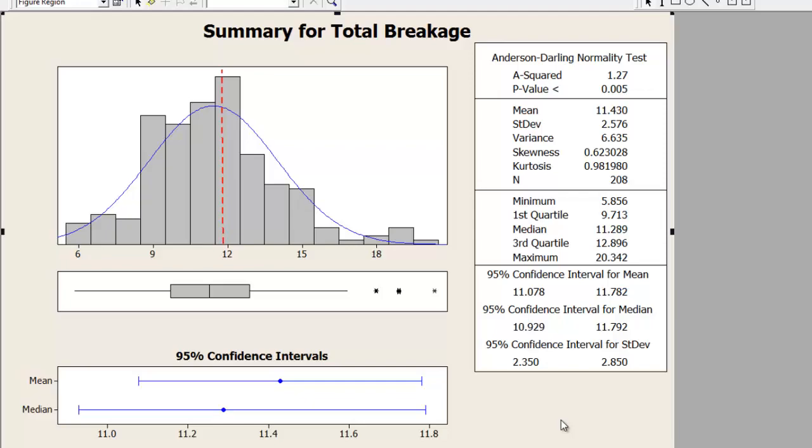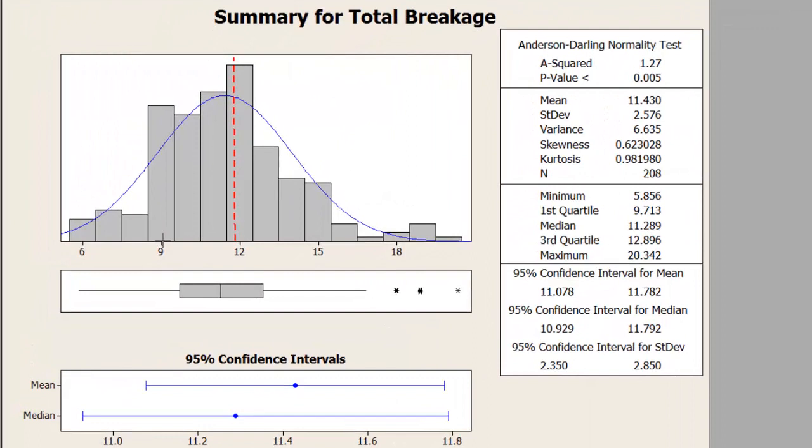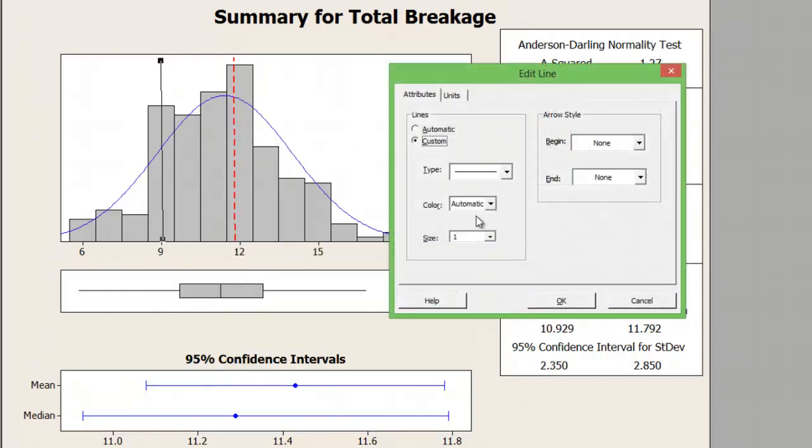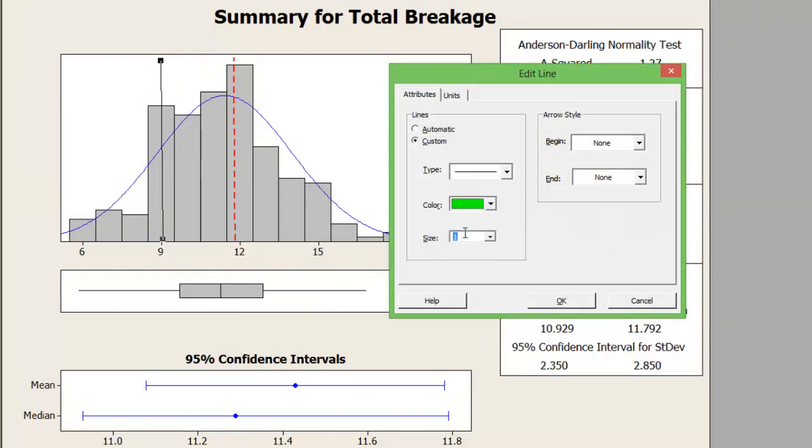Assume that the business has a target, and the business says that the quantity of defect cannot be greater than 9 kgs. I will again edit this, I will turn this into green. So this is what my business expects me to do.